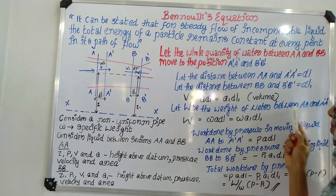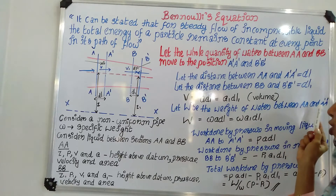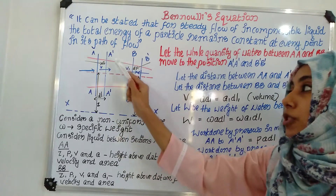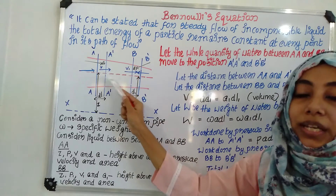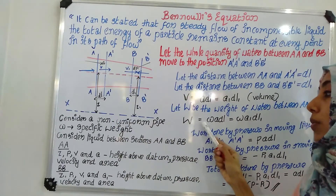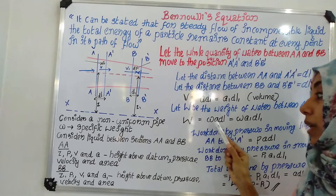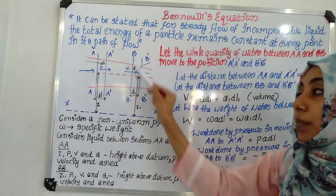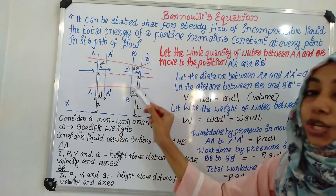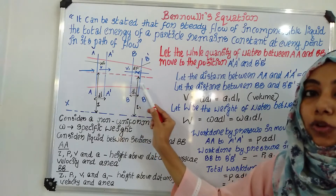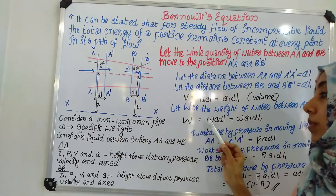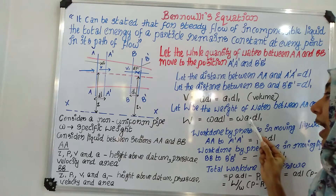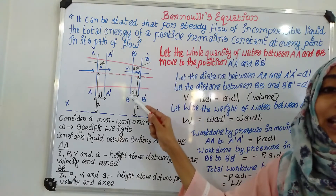Let W be the weight of water between section AA and section A'A'. Capital letter W is the weight of liquid between the AA section and its new position A'A'. We can write: capital W equals small w (specific weight) multiplied by volume. So W equals w times A times DL, which equals w times A1 times DL1. Here A1×DL1 is the volume at section BB.